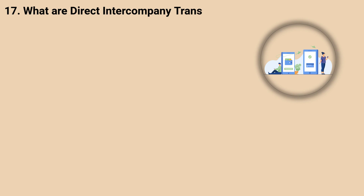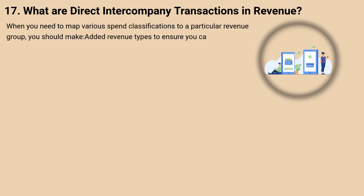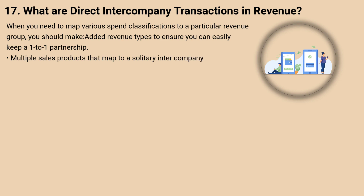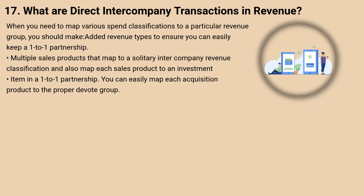17. What are direct intercompany transactions in revenue? When you need to map various spend classifications to a particular revenue group, you should create additional revenue types to ensure you can maintain a one-to-one relationship. Multiple sales products map to a single intercompany revenue classification, and you map each sales product to an investment item in a one-to-one relationship. You can easily map each acquisition product to the proper spend group.